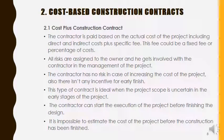The next main heading is cost-based construction contract. In the cost plus construction contract, the contractor is paid based on the actual cost of the project including direct and indirect costs, plus a specific fee. The total cost involved in the project plus an additional percentage fee will be paid by the owner. Here, all risks are assigned to the owner, and the owner gets involved with the contractor in the management of the project.